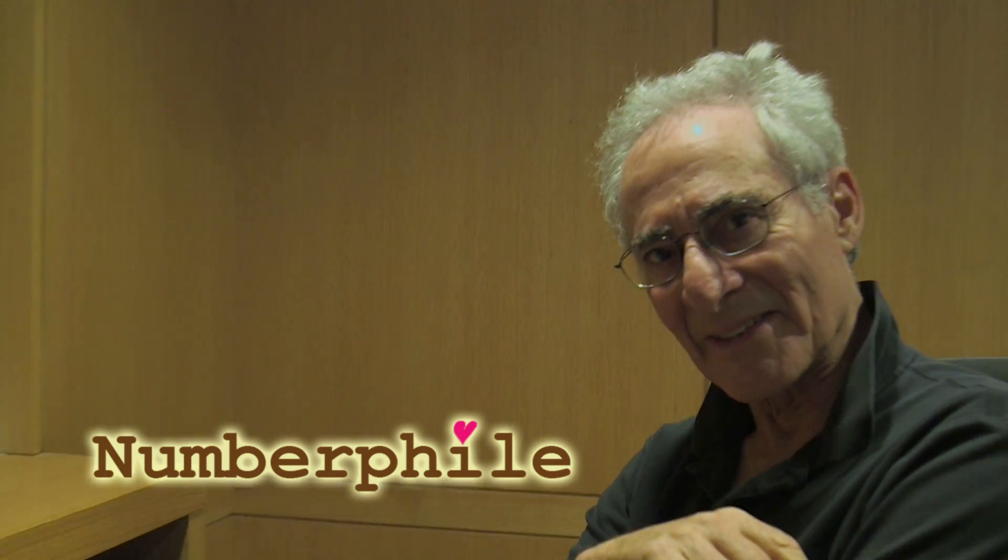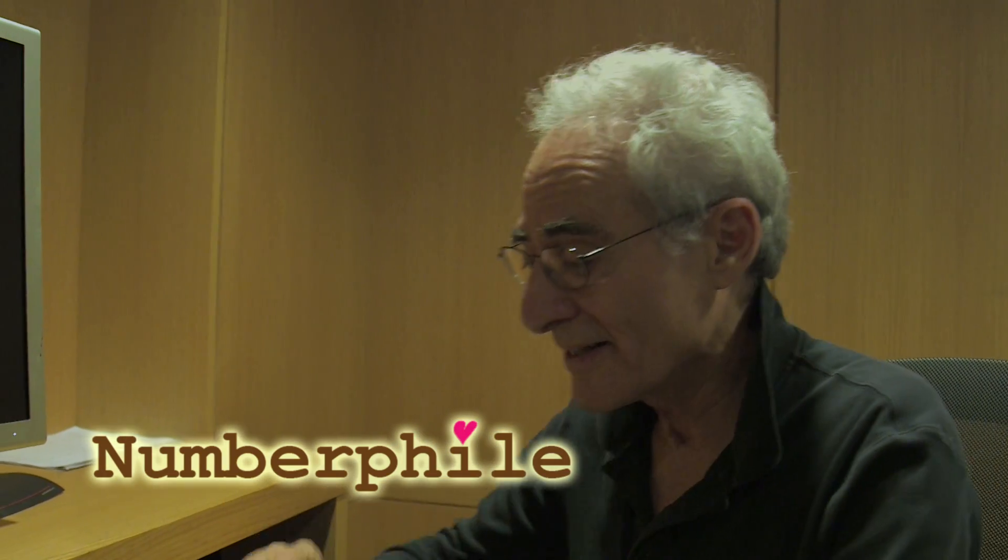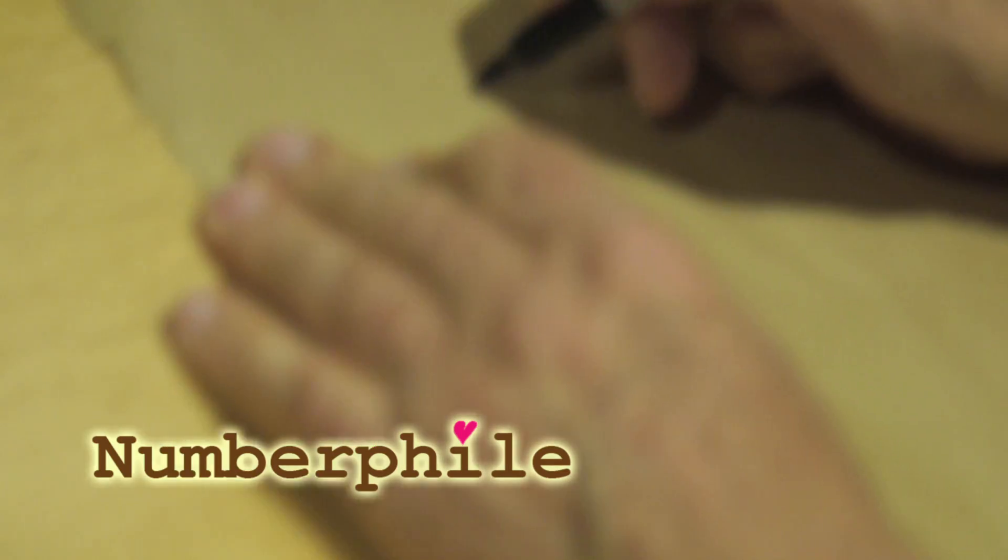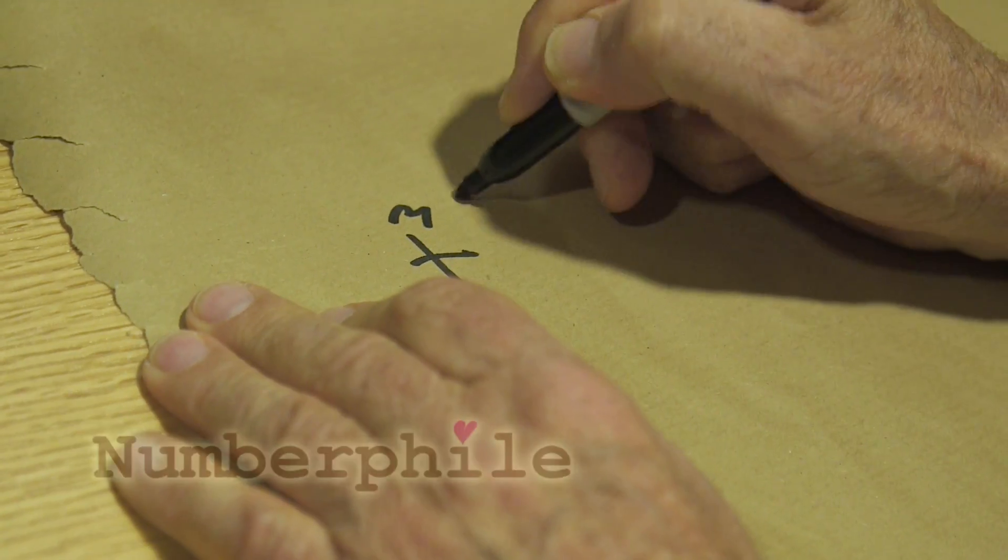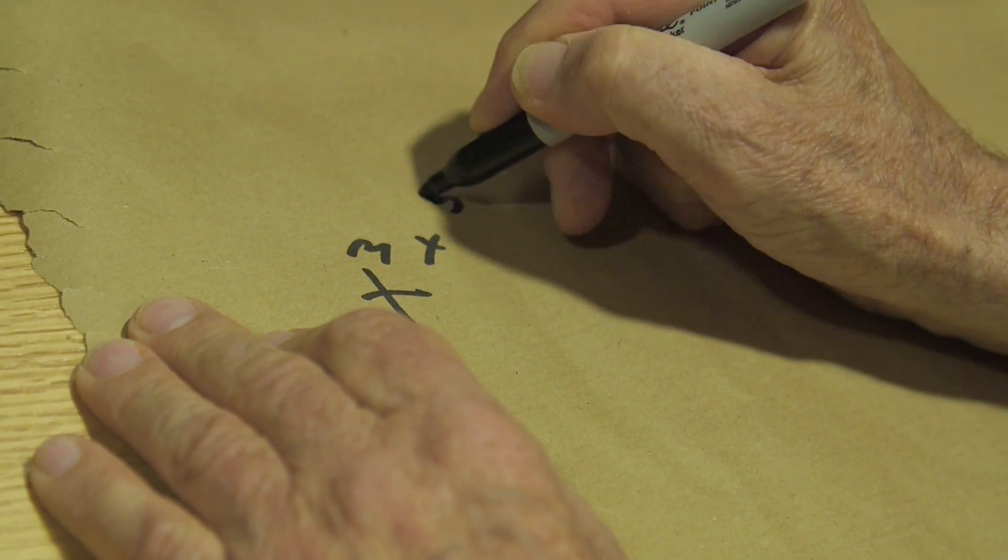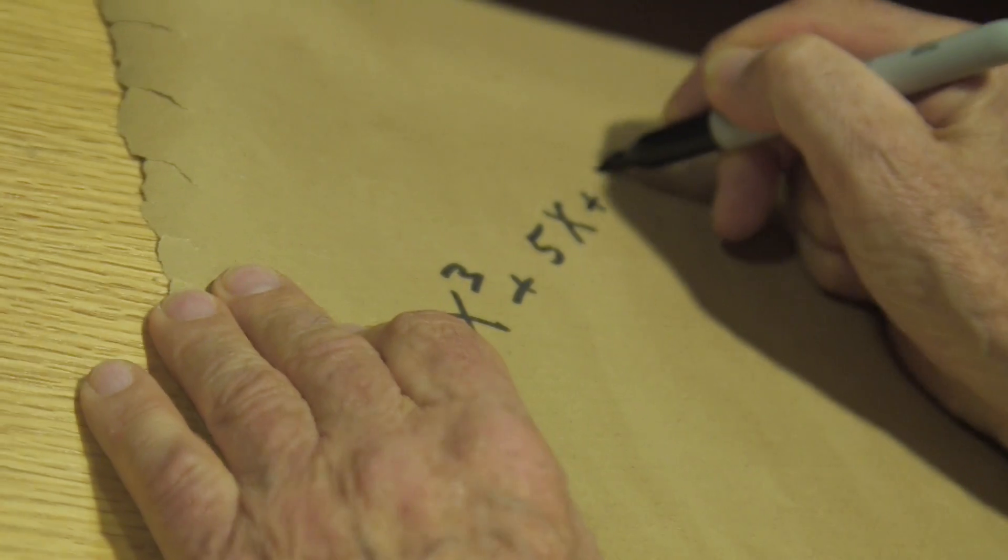I'm going to bring you back to the 16th century first. The Italians, especially, were interested in cubic polynomials—X cubed plus, oh, 5x plus 7, something of that sort.